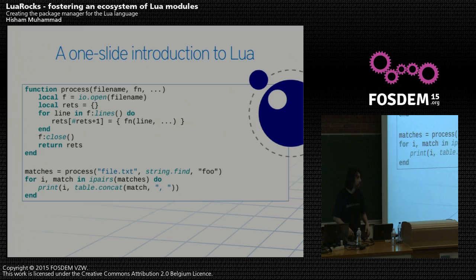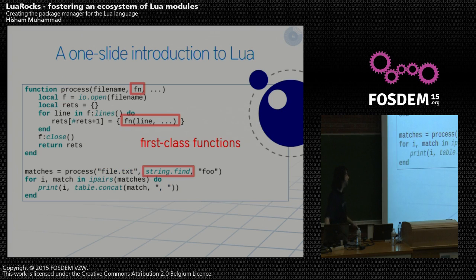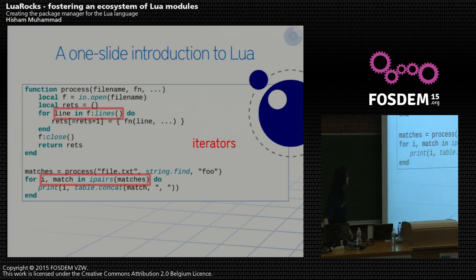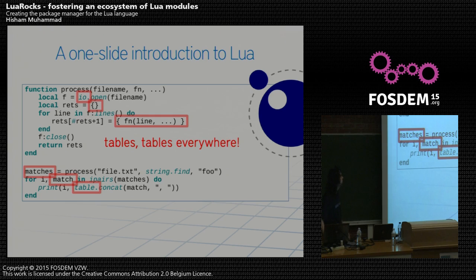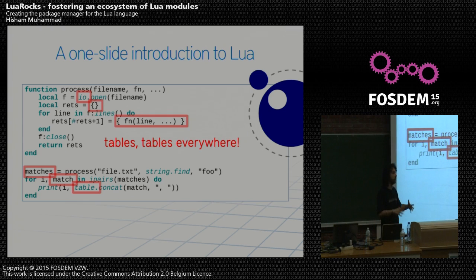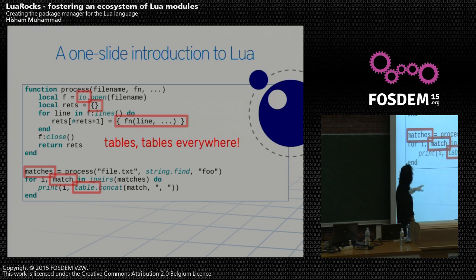It's very superficial to talk about a language based on its looks, but essentially in Lua we can deal with things like objects, we have first-class functions, and with those functions and objects we can build iterators and things like this. The defining aspect of Lua is that it has a single data structure — the table — which is at the same time an associative array and can be used as a vector. So: tables everywhere. Our modules are tables, our data structures are tables, and so on.